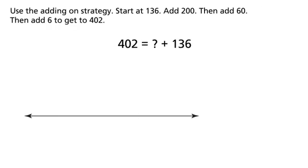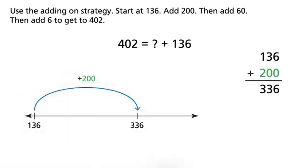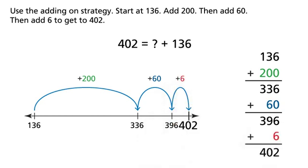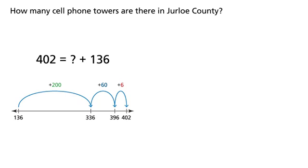Start at 136. Add 200, then add 60, then add 6 to get to 402. How many cell phone towers are there in Jurloe County?